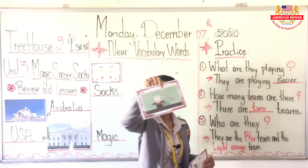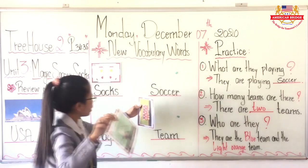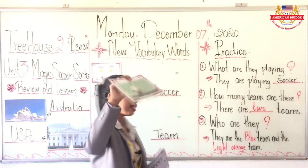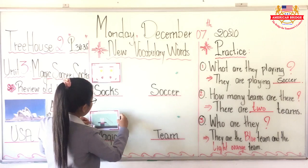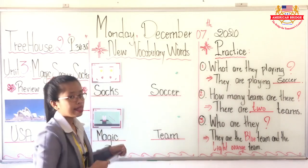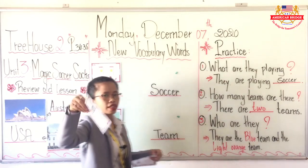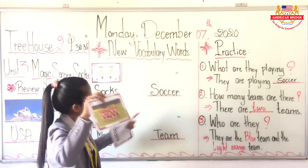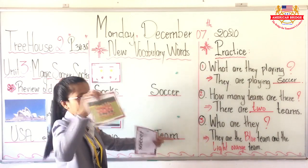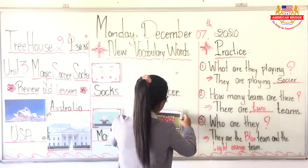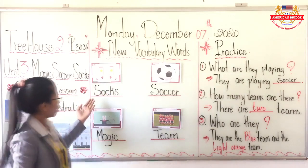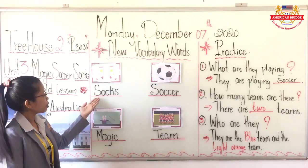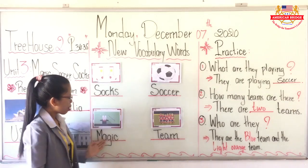Soccer. Our second picture, this one we call magic — spell M-A-G-I-C. The next picture — this one we call team, spell T-E-A-M. And this one is soccer. Read together everyone: socks, soccer, magic, team.